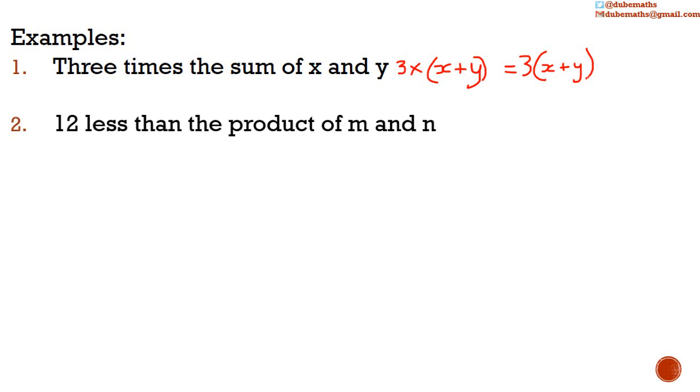A second example. Twelve less than the product of m and n. The product of m and n is m multiplied by n. We do not need to put in the multiplication sign. And twelve less than this means m and n take away twelve. Twelve less than a hundred is a hundred take away twelve, which is eighty-eight. So, twelve less than m and n is m and n subtract twelve.